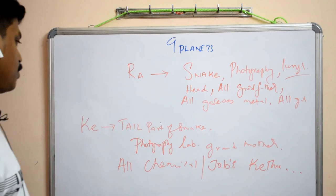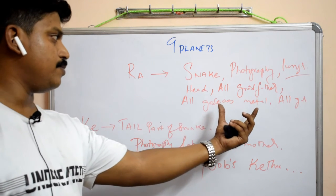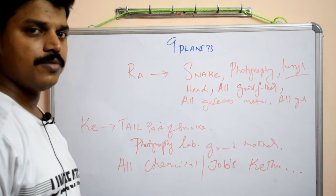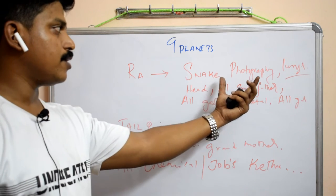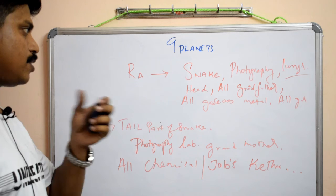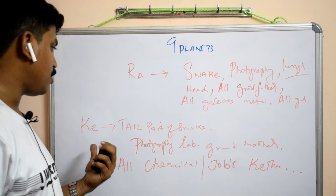For gaseous, for gaseous metal, like radium and those stuffs comes under Rahu. And for photography purpose comes under Rahu. These are the basic things for Rahu and Ketu.